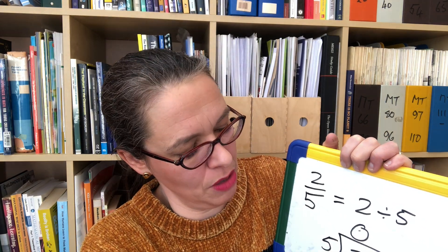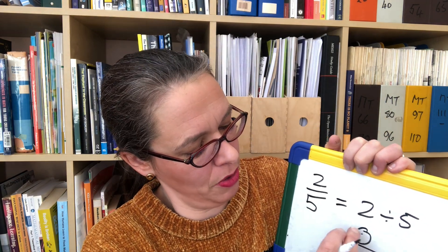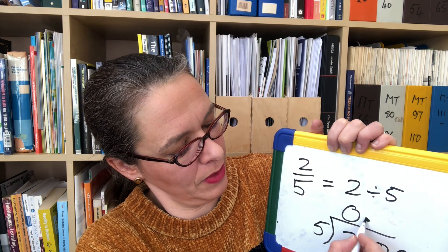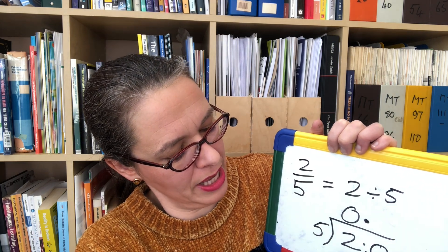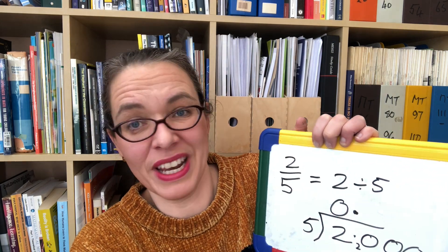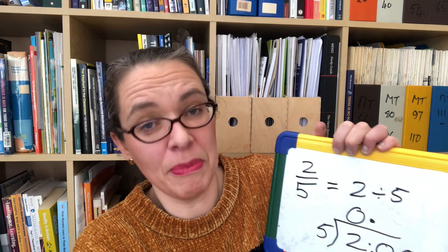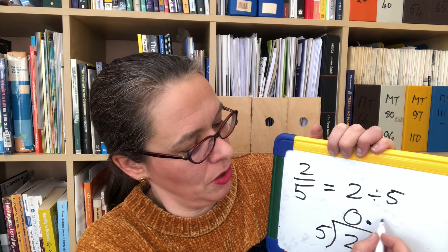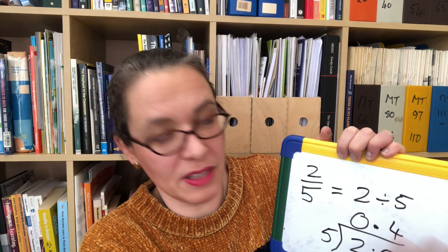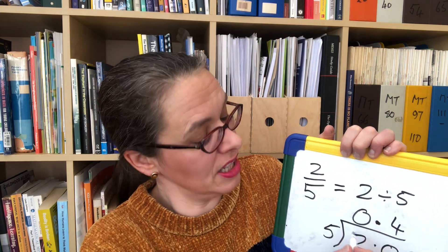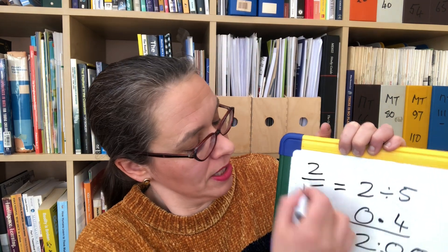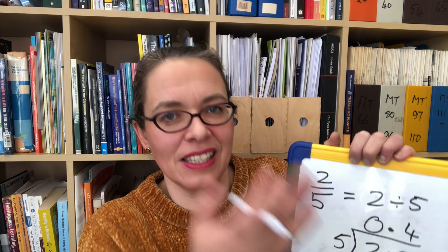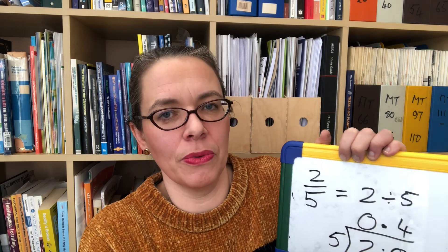How many fives in two? None. So we have to continue beyond the decimal point. Carry that two, so we have 20. How many fives in 20? Four. It's worked out: 0.4. So two fifths is 0.4.